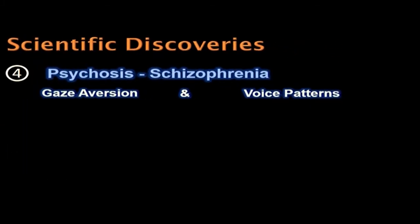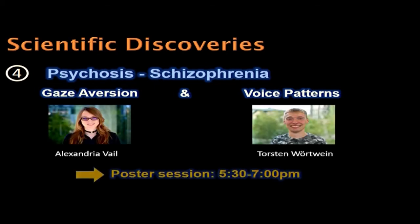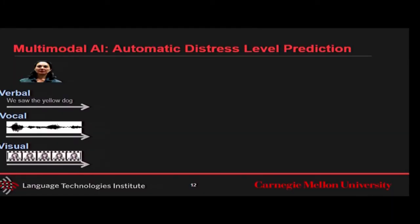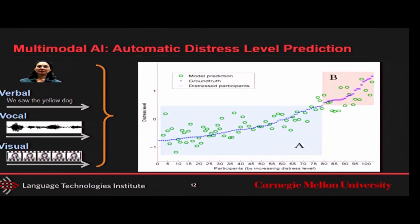The fourth discovery looks at psychosis and schizophrenia, specifically gaze aversion and voice patterns. I'll invite you to talk to my students, who are showing two posters this evening on gaze aversion and voice patterns. These were a summary of all the behavior markers. A lot of them are individual in their modality, and now we want to fuse them. On a test set of 100 patients ordered by their level of symptoms — in this case PHQ-9 — you can see people high and low on the scale, and the green shows the prediction from multimodal fusion.